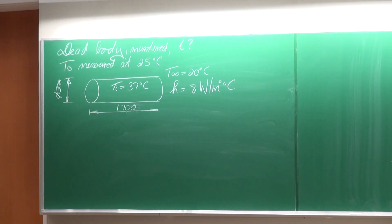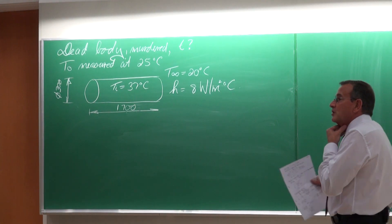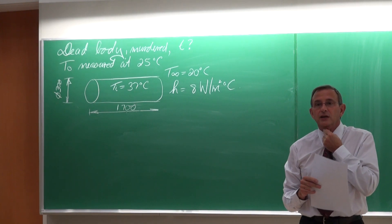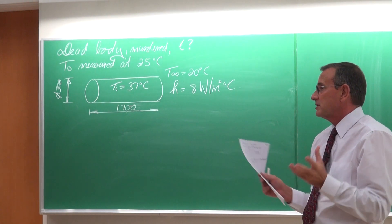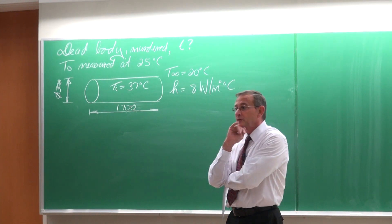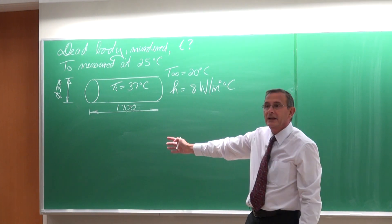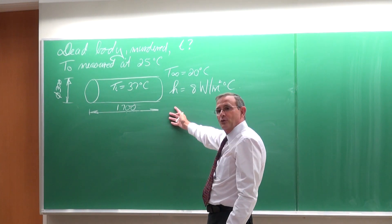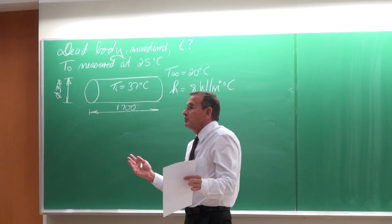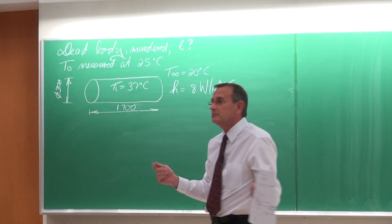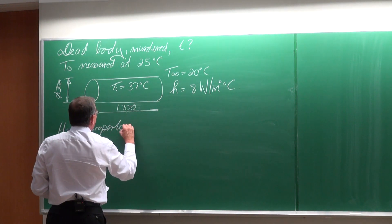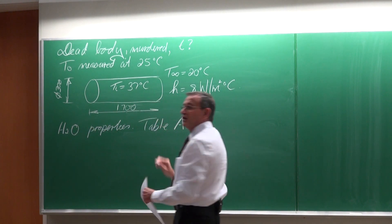The values that we're going to need are the thermal conductivity, the density, the Cp, and the alpha value — the thermal diffusivity. In the back of the textbook there are tables, typically in appendix A, where you can get the properties of gases, liquids, and solids. If you look through it, you'll see there are no properties for a human being. But we know that about 80% of a human being is water, so it would be a good assumption to use the properties of water. Go to table A9 for the properties of water.